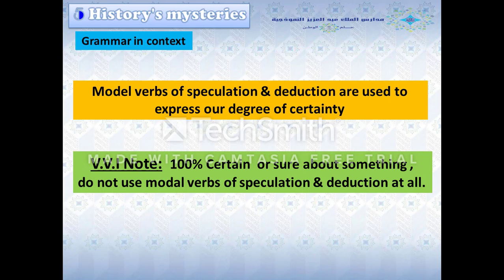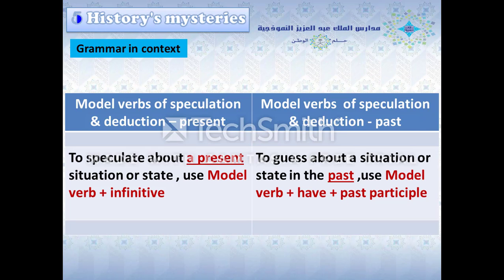Modal verbs of speculation and deduction are used to express our degree of certainty. Very important note: if you are 100% certain or sure about something, do not use modal verbs of speculation and deduction at all. To speculate about a present situation or state, use modal verb plus infinitive. In the past, to guess about a situation or state, use modal verb plus have plus past participle.